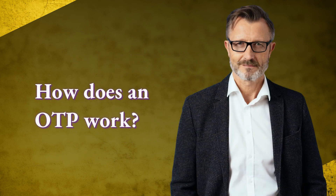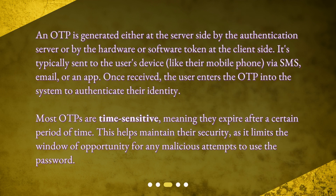How does an OTP work? An OTP is generated either at the server side by the authentication server, or by the hardware or software token at the client side. It's typically sent to the user's device, like their mobile phone, via SMS, email, or an app. Once received, the user enters the OTP into the system to authenticate their identity.